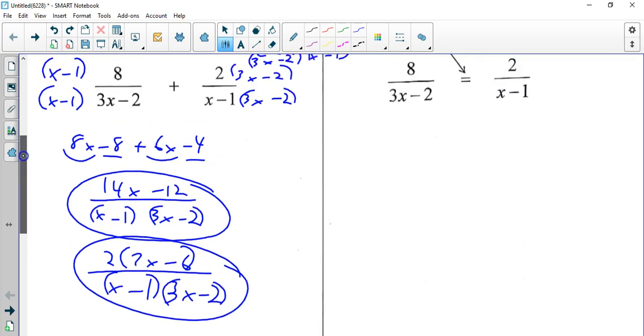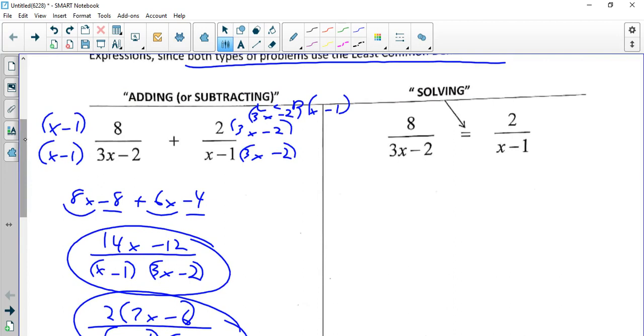Now over here, the LCD is going to be the same, but this time we're going to multiply the top only by the LCD. So we're going to multiply by 3x minus 2 times x minus 1 for both terms. And then since everything is multiplication, notice what happens. This cancels and this cancels. And you end up with 8x minus 8 equals 6x minus 4.